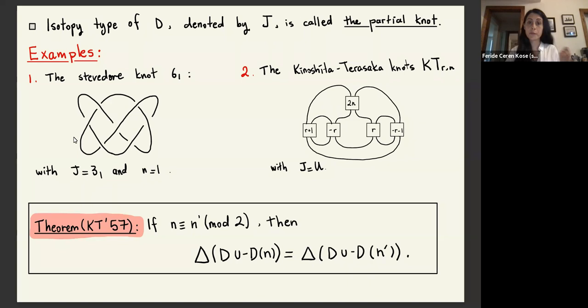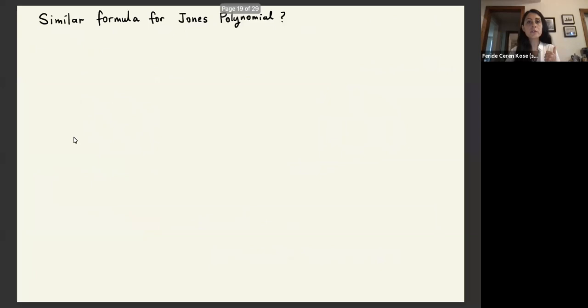First of all, the previous results regarding the Alexander polynomial of the Kinoshita-Terasaka knot implies immediately. And also, you can use this construction to produce infinitely many knots with the same and trivial Alexander polynomial.